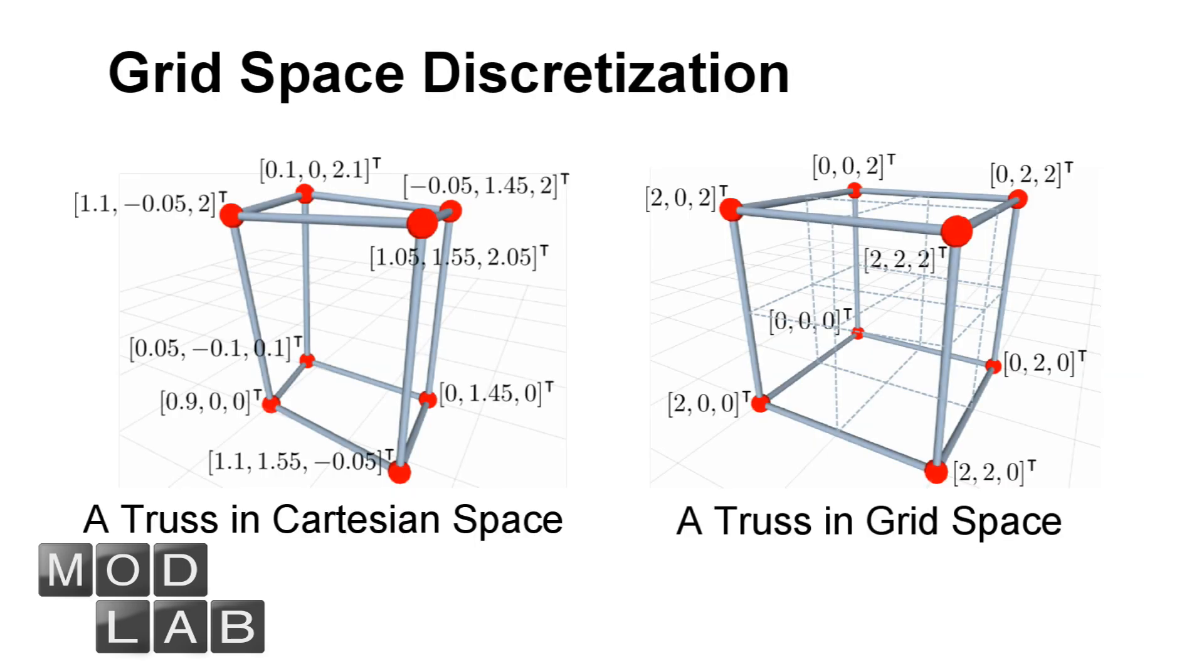We developed a new approach to discretize the whole space considering the overall geometry of a VTT to generate cells with different sizes so that a truss in an irregular cubic shape can be represented as a regular cube in grid space. This can avoid too many small cells to be generated.